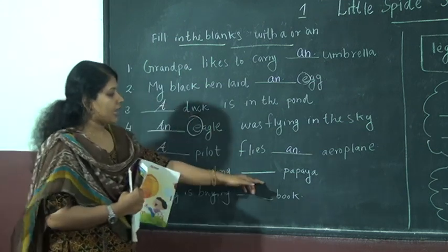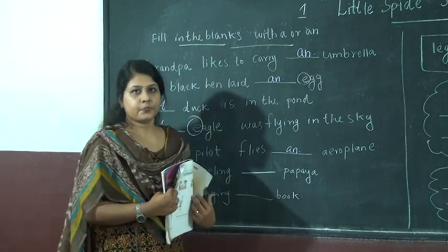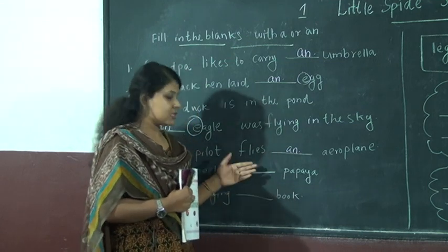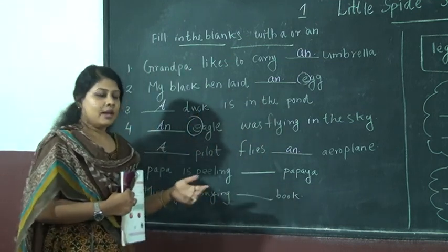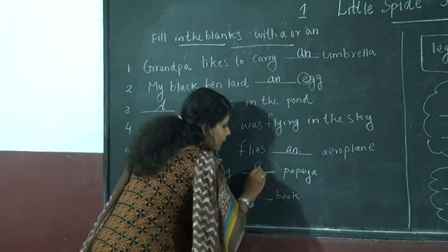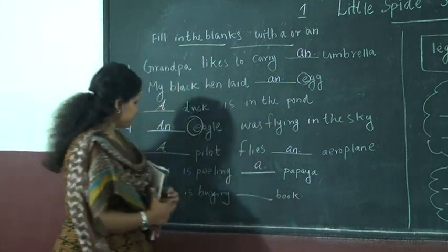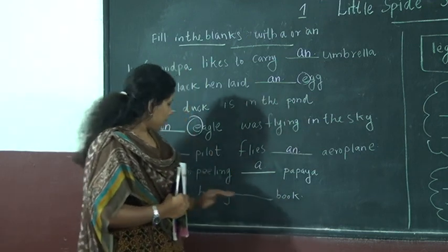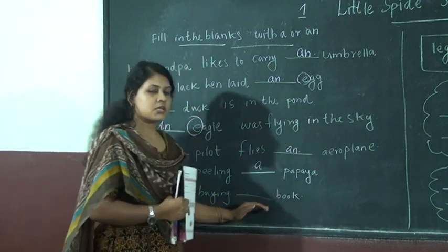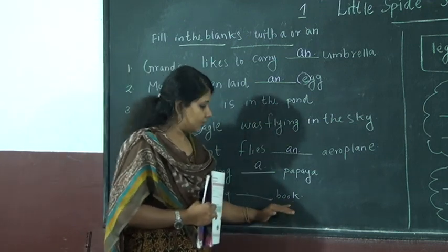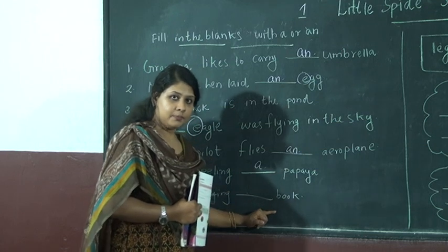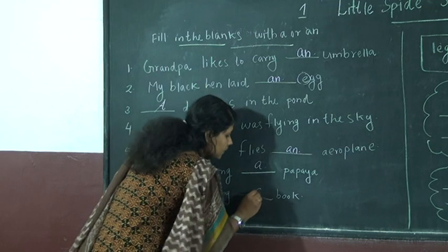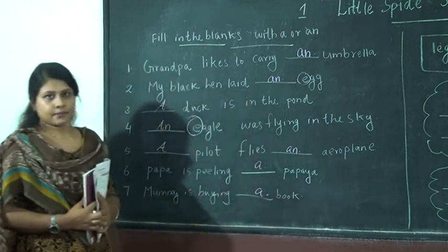Papa is peeling dash papaya. The word is papaya. The first letter is P, so A is the right one. A papaya. Next: Mummy is buying dash book. The word is book. First letter B, so A is the right answer. A book.